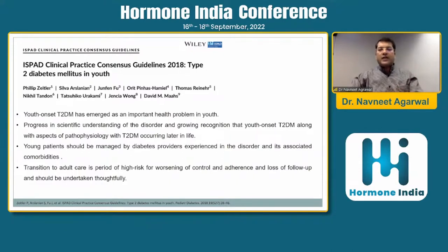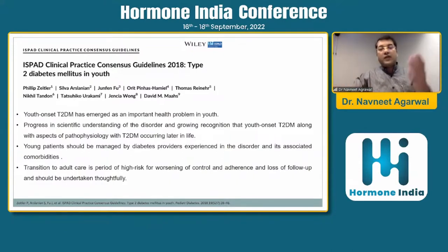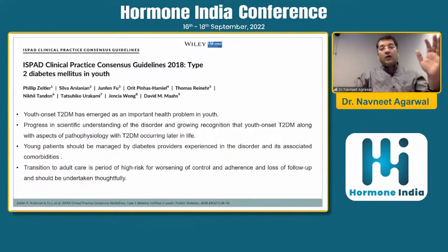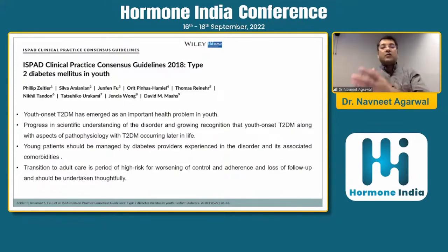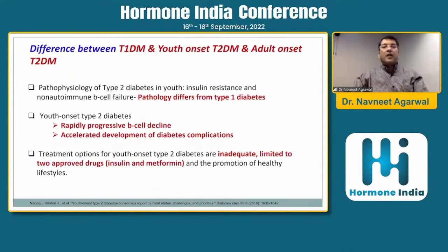A patient was diagnosed almost 17 years ago as type 2 diabetes, was placed on insulin and different oral anti-diabetic drugs, and still remains uncontrolled after 17 years. So that means the diagnosis was at fault. If we can correct the diagnosis, we can bring the patient to target.